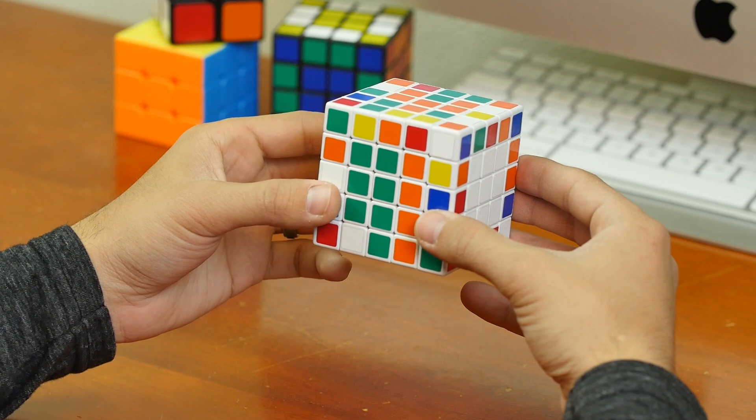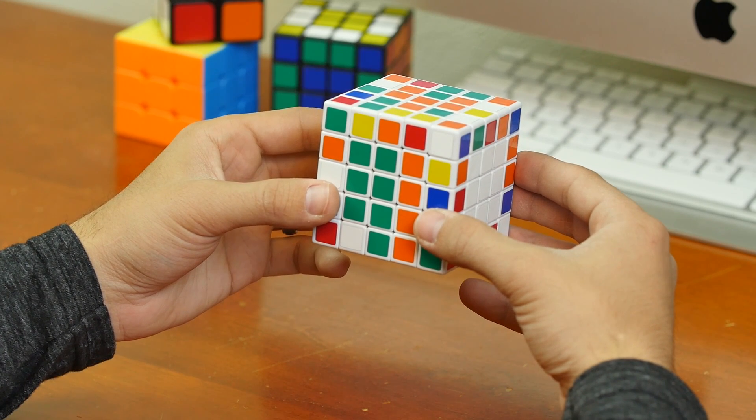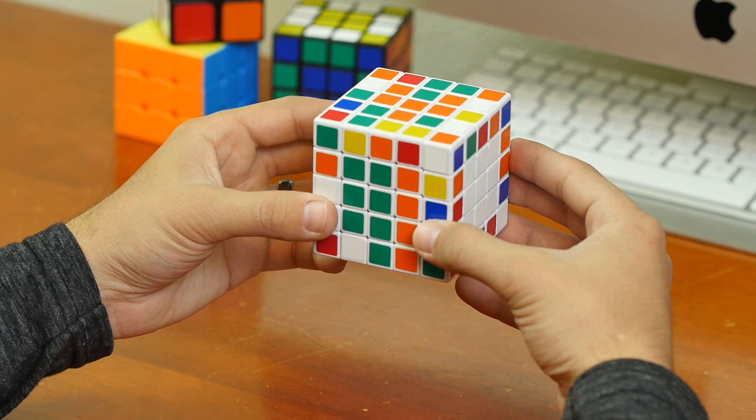This video is a demonstration for how to solve a 5x5 Rubik's Cube, Step 1, Green and Orange Centers.